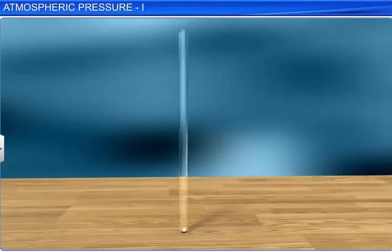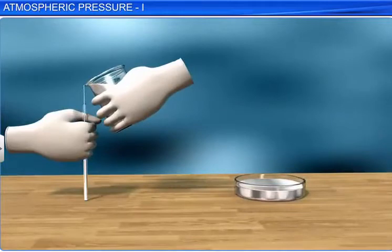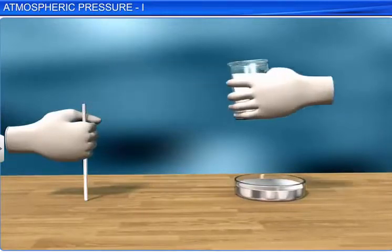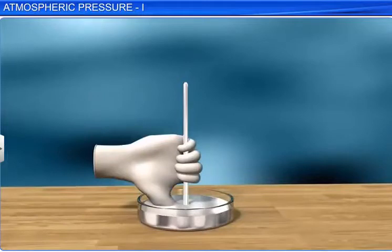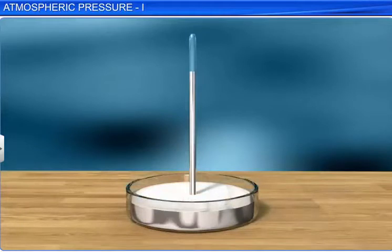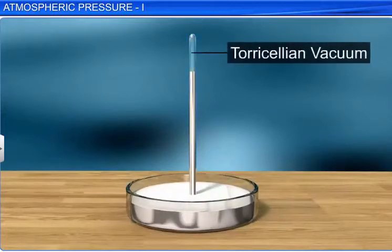A simple barometer consists of a glass tube of length 100 cm with one end closed and a trough with mercury. The tube is completely filled with pure and dry mercury. Its open end is closed with the thumb and inverted vertically in the trough filled with mercury. It is observed that some mercury from the glass tube flows down into the trough and a fixed length of mercury column remains in the tube. The empty space above the mercury column is called Torricelli's vacuum.